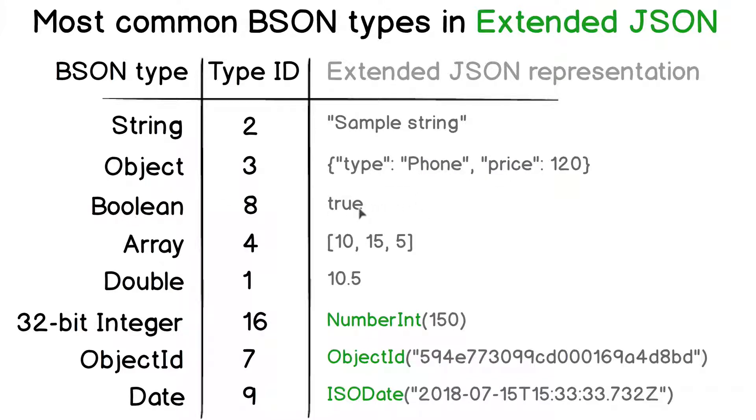Boolean is either true or false. Array is square brackets with a list of elements separated by commas.